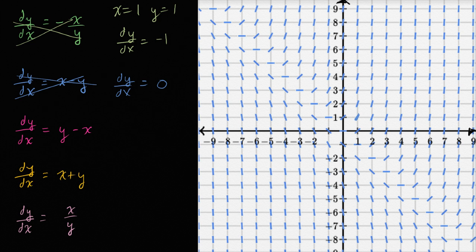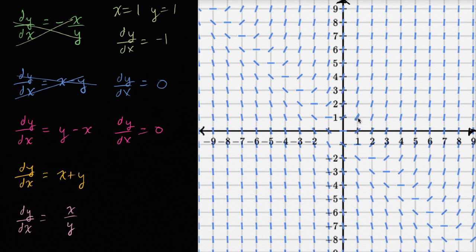For this magenta differential equation, if x and y are both equal to one, then one minus one is going to equal zero. And we've already seen the slope is not zero here. So rule that one out.